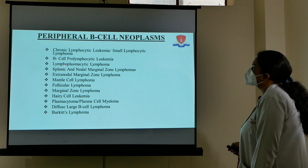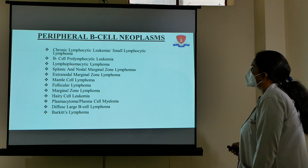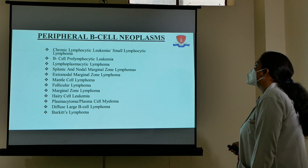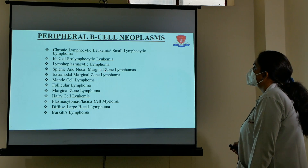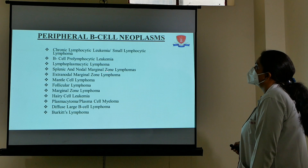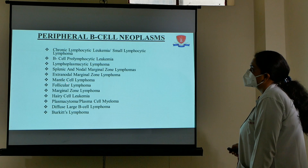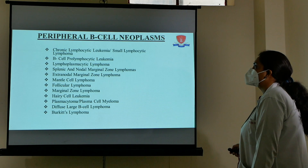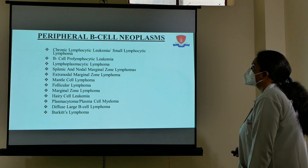Next is B cell prolymphocytic leukemia where prolymphocyte proliferation occurs. Lymphoplasmacytic lymphoma involves proliferation of both lymphoid cells and plasma cells. Marginal zone lymphoma arises from the marginal zone, which is the perifollicular area — the periphery of the germinal center follicles. It may be nodal or extranodal. Mantle cell lymphoma develops from mantle cells, follicular lymphoma from follicles, hairy cell leukemia, plasmacytoid lymphoma, and others are also included.